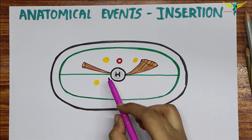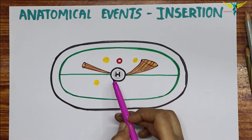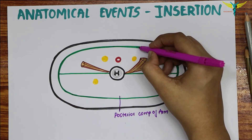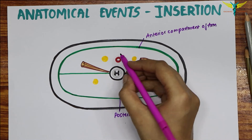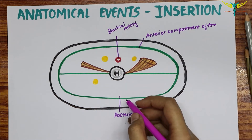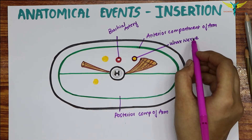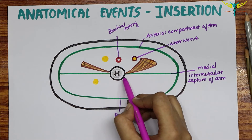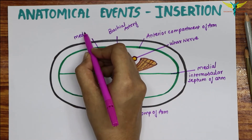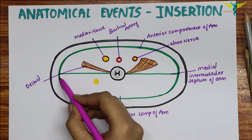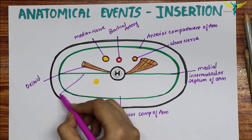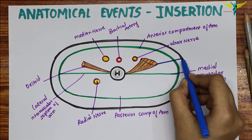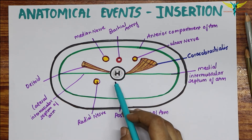Now let's look at the important anatomical events that occur at the insertion of the coracobrachialis. This is a very important landmark because many anatomical events occur at this level. In the cross-section we can see the posterior compartment, the anterior compartment of the arm, the brachial artery, the ulnar nerve, the medial intramuscular septum, the humerus, the median nerve, the deltoid muscle, and the lateral intramuscular septum.